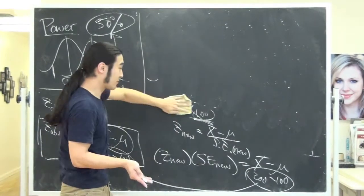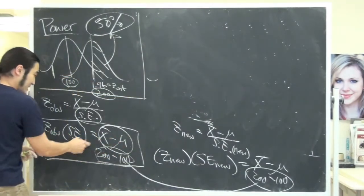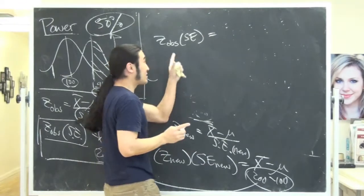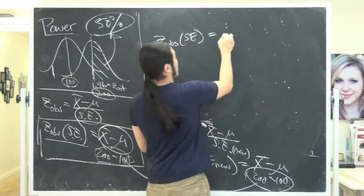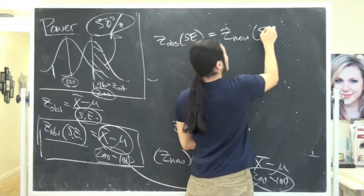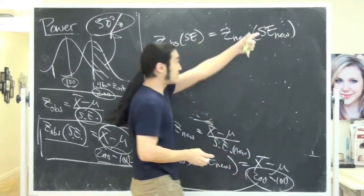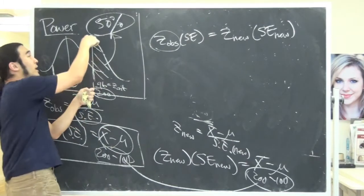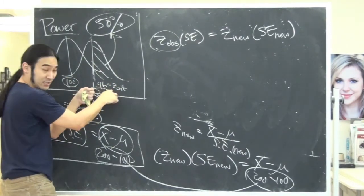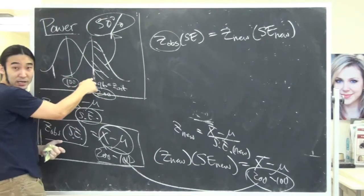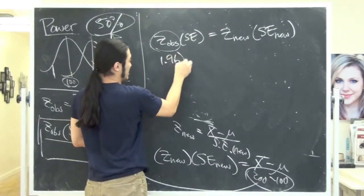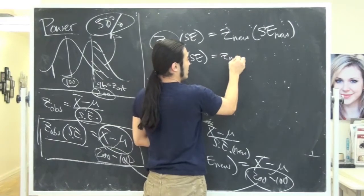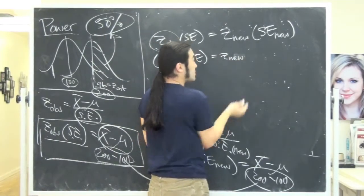So if you're like, okay, this is all great, but is there a shortcut formula to this? Yes. This formula will always work for you. So the shortcut formula is the difference is your z observed times the standard error for anything. But if that's true on this side, it's also true over here. So that same difference is also your z new times the new standard error. And I wish I didn't have to erase that, but I did. But now we'll just plug in.